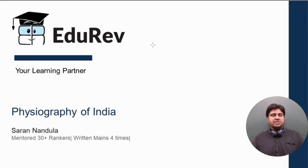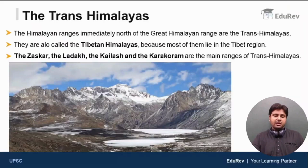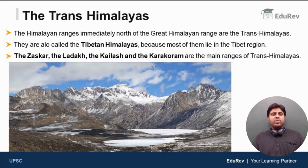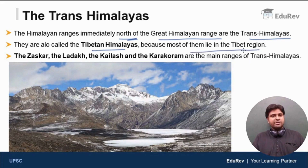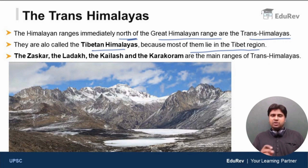Let us discuss the second division, which is Trans-Himalayas. The Himalayan ranges immediately to the north of the Great Himalayan Range are the Trans-Himalayas. Trans-Himalayas are also called Tibetan Himalayas because most of them are present in the Tibet region. The ranges of the Trans-Himalayas are the Zaskar, Ladakh, Kailash and the Karakoram. In this video, we are going to discuss in detail about all these ranges.